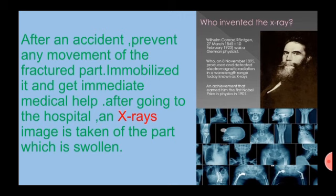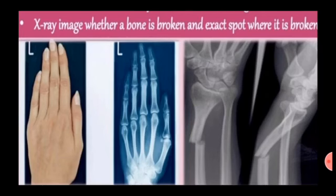X-rays were discovered by William Conrad Röntgen. X-rays are a type of radiation called electromagnetic waves. X-ray imaging creates pictures of the inside of your body. The image shows parts of your body in different shades of black and white because different tissues absorb different amounts of radiation. Calcium in bones absorbs X-rays the most, so bones look white. An X-ray image shows whether a bone is broken and the exact spot where it is broken, helping in providing proper treatment.